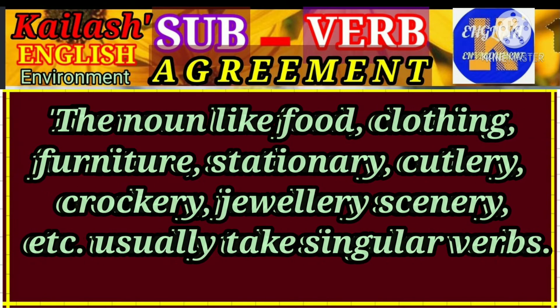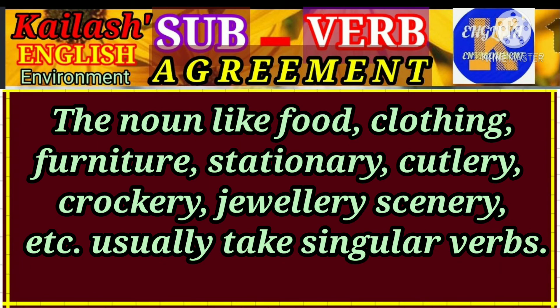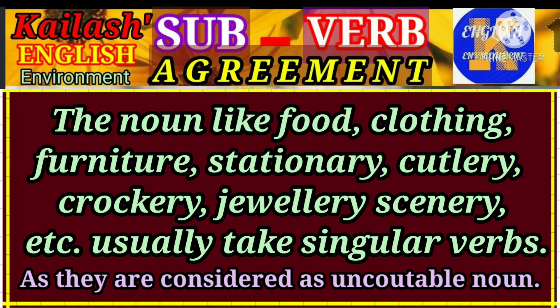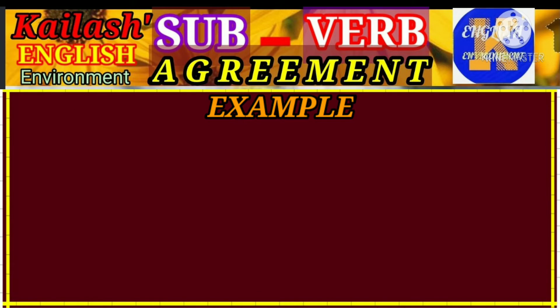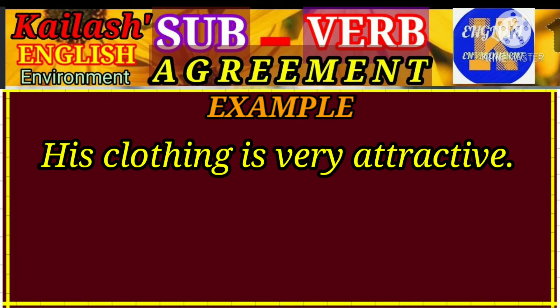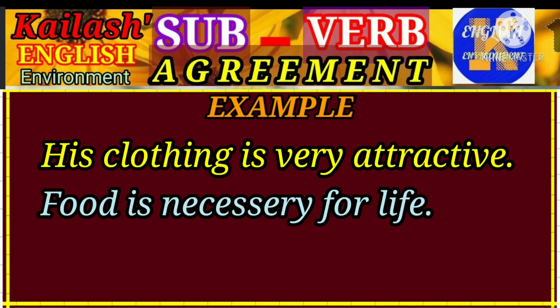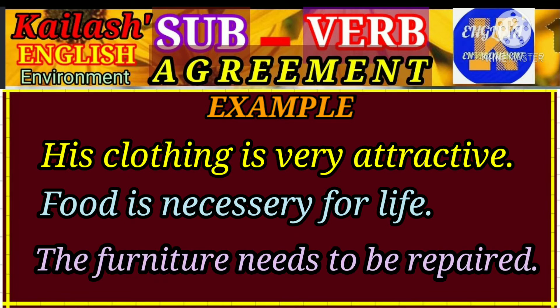Nouns like food, clothing, furniture, stationery, cutlery, crockery, jewellery, and scenery usually take a singular verb as they are considered uncountable nouns. For example, 'His clothing is very attractive.' 'Food is necessary for living.' 'The furniture needs to be repaired.'